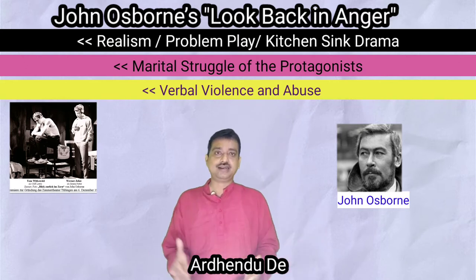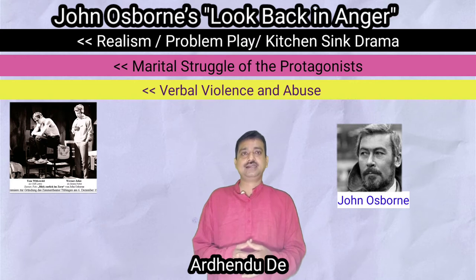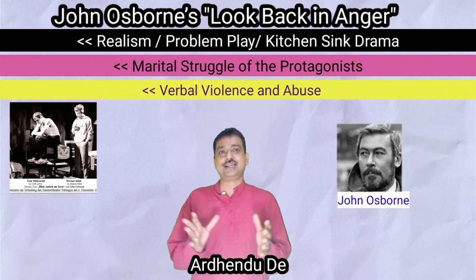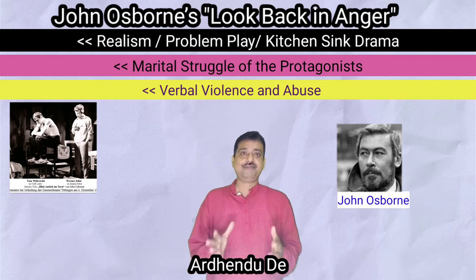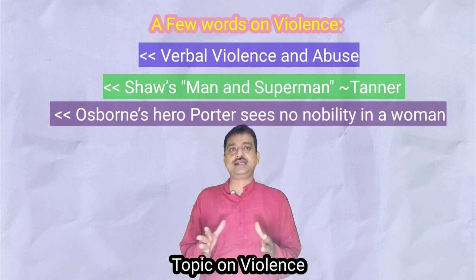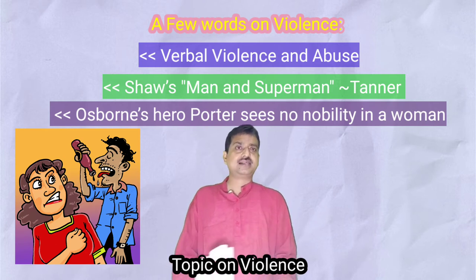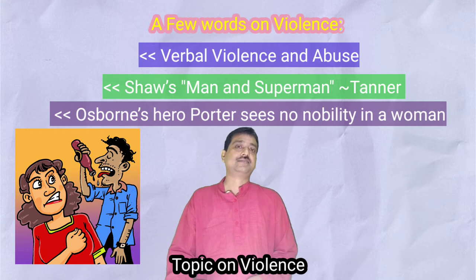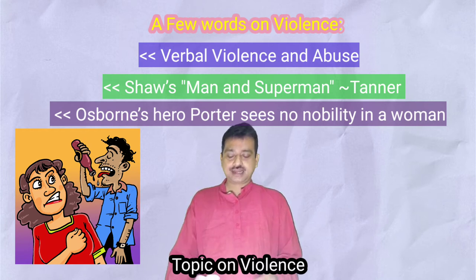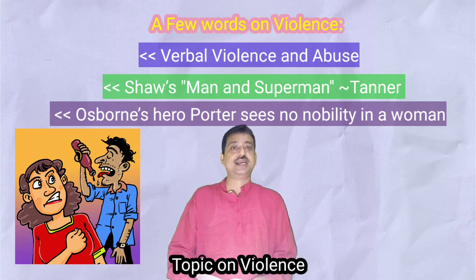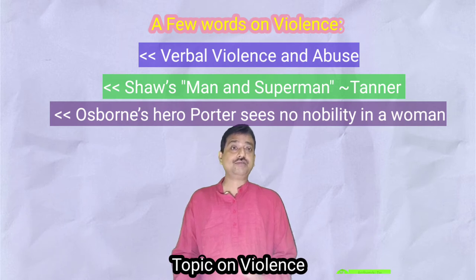Look Back in Anger is full of verbal violence and abuses directed against women. We will study how much these are theoretically significant. If Look Back in Anger is a play of verbal violence and abuse, much of it is directed against women. Rarely has the hero of any drama indulged in such violent excesses against women — barring of course Shaw's Man and Superman. There is a mode of difference because while in Shaw's play the hero Tanner admits the procreative importance of the woman, Osborne's hero Potter sees no such value in a woman.